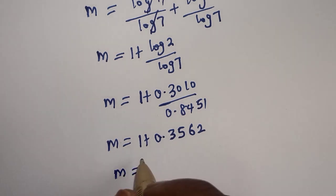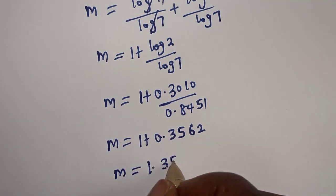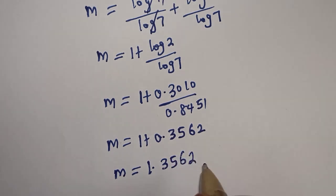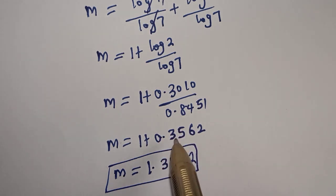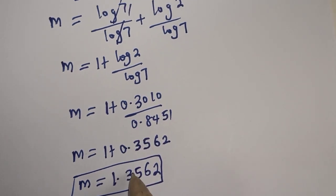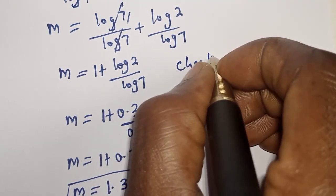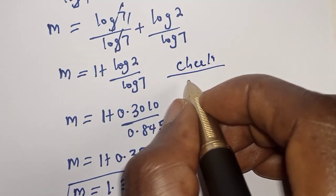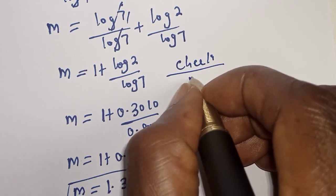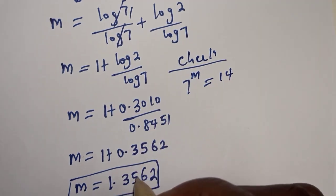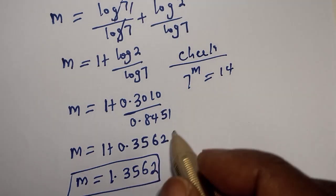m is equal to 1.3562. This is the final answer. We can check to confirm if our answer is right or wrong. Let's check. The given equation is 7 raised to power m is equal to 14, when m is 1.3562.